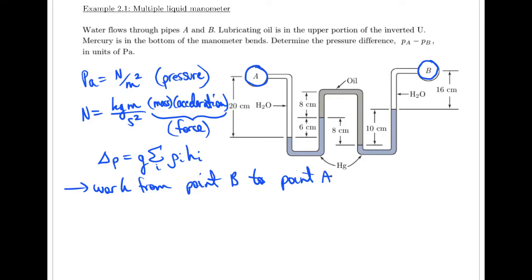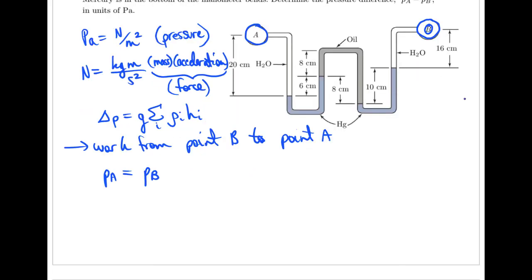The pressure at point A equals... now we work from point B all the way along the manometer to get back to point A. So that equals P_B. Then we work downwards. Moving downwards is an increase in pressure, so we add on rho GH for this portion of water we just traveled downwards. And 16 centimeters will be written as 0.16 meters.